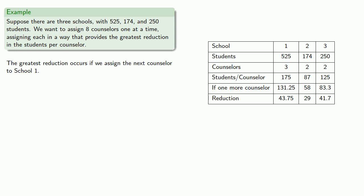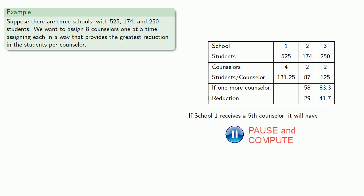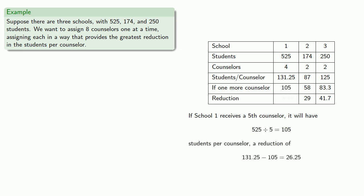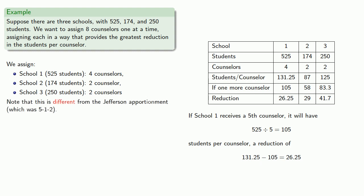While we don't need it, let's go ahead and recompute the values for School 1 anyway. School 1 has four counselors, and if it were to receive another, we can find how it would benefit. Our final assignment is: School 1 gets four, School 2 gets two, and School 3 also gets two. Note that this is actually different from the Jefferson apportionment, which assigned the counselors 5, 1, 2.